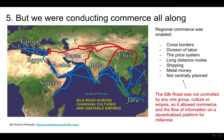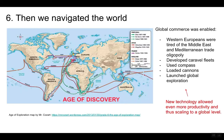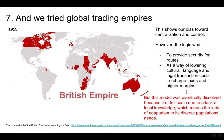But we were conducting commerce all along. The Silk Road was not controlled by any one group, culture, or empire, so it allowed commerce and the flow of information on a decentralized platform for millennia. Then we navigated the world. New technology allowed even more productivity and thus scaling to a global level. And we tried global trading empires, but this model was eventually dissolved because it didn't scale due to a lack of local knowledge, which means the lack of adaptation to its diverse population's needs.